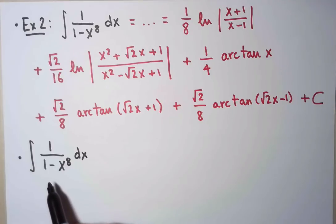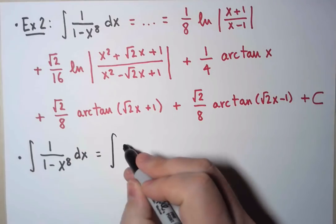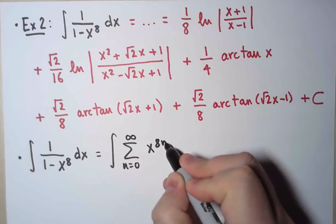This function is asking us to rewrite it as a power series, because this is exactly the geometric series, but using x to the 8, instead of x as the variable. So, look what happens when I simply do that. I can rewrite this as the sum from n equals 0 to infinity of x to the 8n.